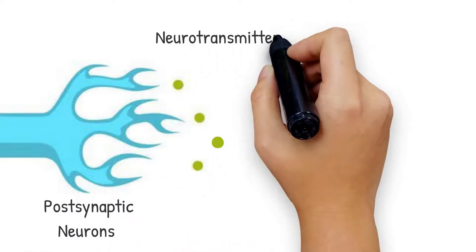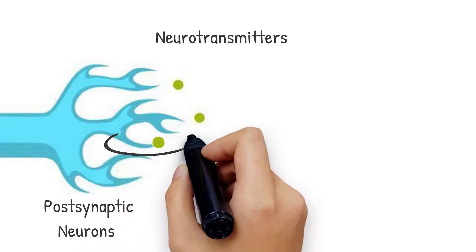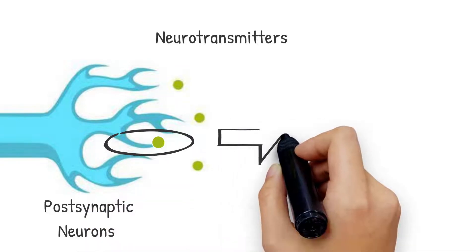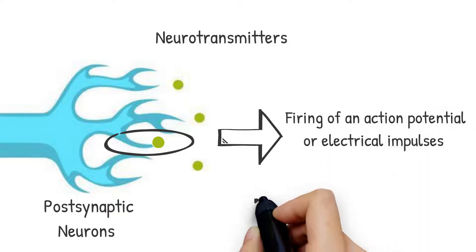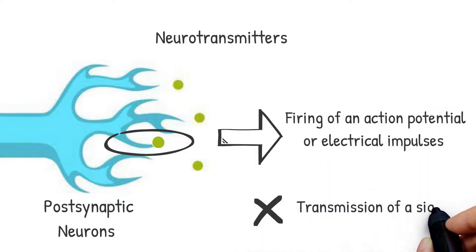Then, the neurotransmitters either excite or inhibit the post-synaptic neuron. Exciting the neuron results in the firing of an action potential of electrical impulses, whereas the latter prevents the transmission of a signal.